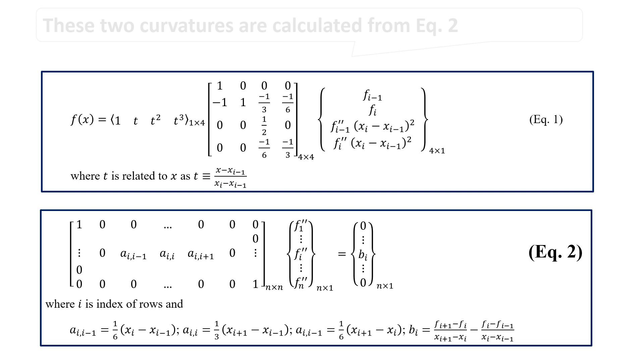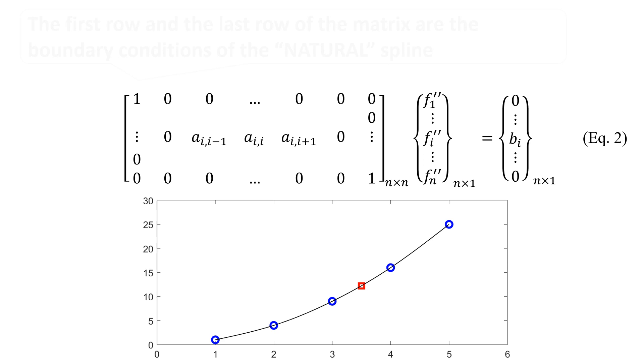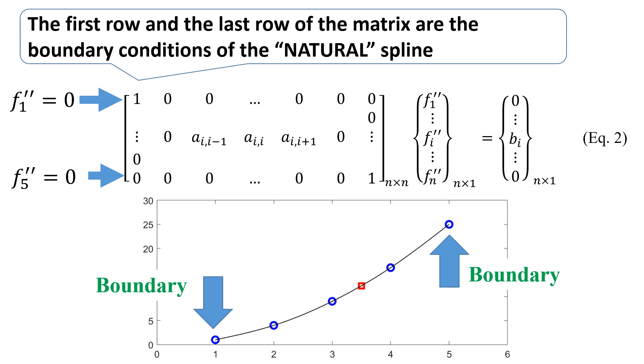These two curvatures are calculated from equation 2. The first row and the last row of the matrix are the boundary conditions of the natural spline.